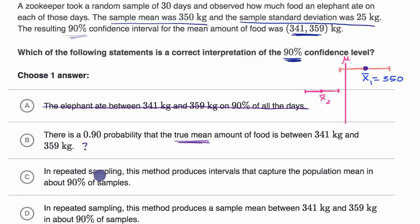In repeated sampling, okay, I like the way that this is starting. In repeated sampling, this method produces intervals. Yep, that's what it does. Every time you sample, you produce an interval that capture the population mean in about 90% of samples. Yeah, that's exactly what we're talking about. If we just kept doing this, that if we have well-constructed 90% confidence intervals, that if we kept doing this, 90% of these constructed sampled intervals should overlap with the true mean. So I like this choice.